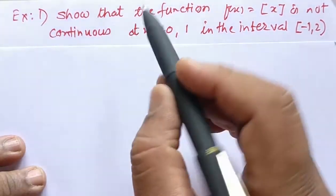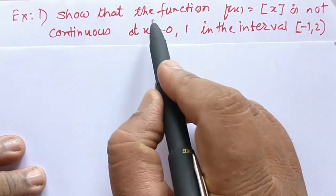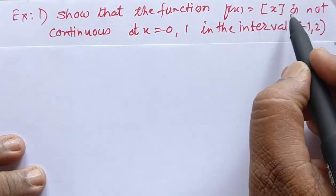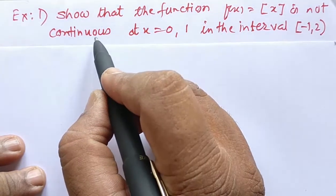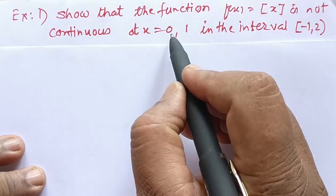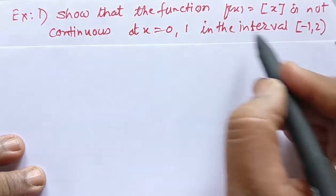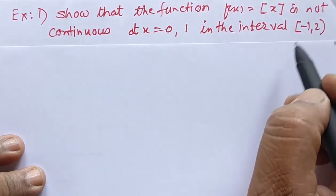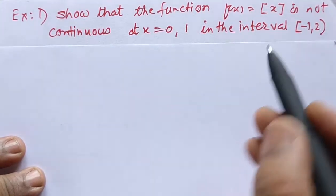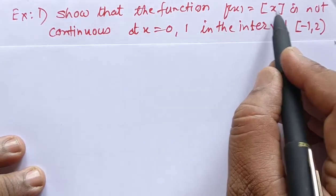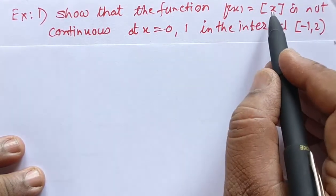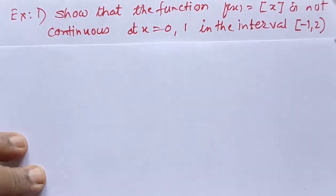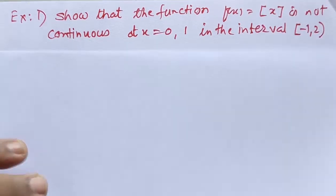Example number 1. Show that the function f(x) equal to the step function is not continuous at x equal to 0 and x equal to 1, in the closed interval minus 1 to 2 open. By definition of the step function, we shall see its graph in the interval from minus 1 to 2.